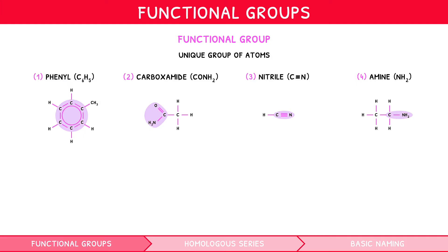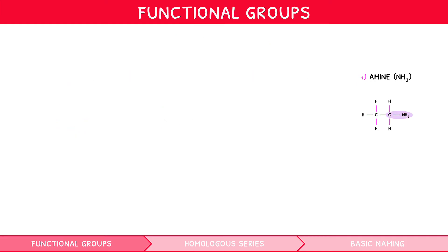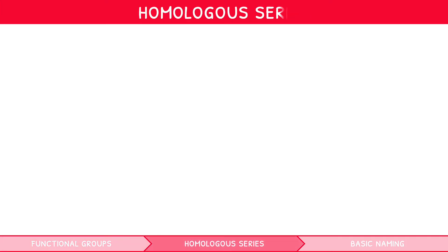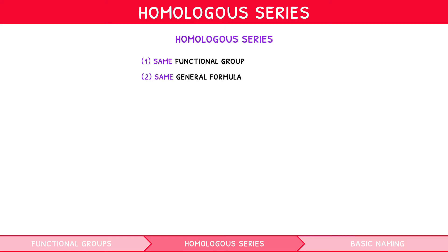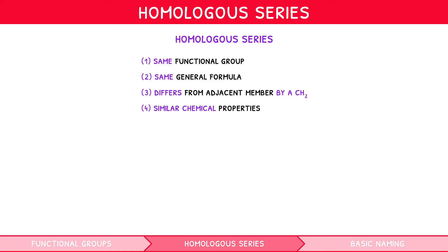Organic compounds can be organized into groups known as homologous series, and all have four main rules to define their members. All members contain the same functional group. All members can be defined by the same general formula. Each member differs from the adjacent member by a CH2 group. And each member exhibits similar chemical properties, while the series exhibits a gradation in physical properties — i.e. they change slightly as you progress through the series.